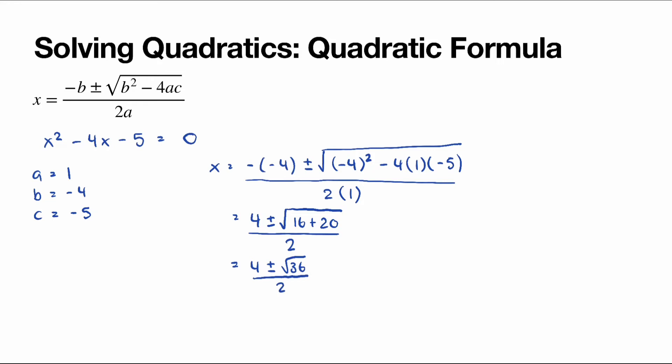The square root of 36 is 6, so we have 4 plus or minus 6, divided by 2. This gives us two answers: 4 plus 6 divided by 2 equals 10 divided by 2, which is 5; and 4 minus 6 divided by 2 equals negative 2 divided by 2, which is negative 1. So our answers for x squared minus 4x minus 5 equals 0 are x equals 5 and x equals negative 1.